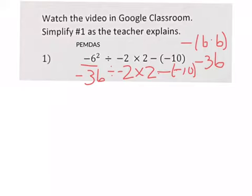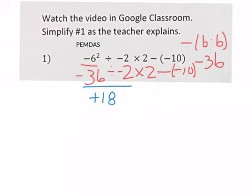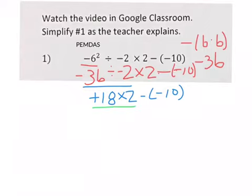Copy it all down. We're done with our exponents and we don't have any parentheses, so now we're going to multiply or divide left to right in the order it appears. We do negative 36 divided by negative 2, which is positive 18. Everything else gets brought down. Continuing with multiplication and division left to right, we now have a negative multiplication, so 18 times 2 is 36.